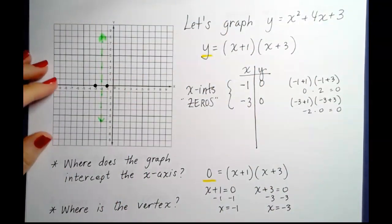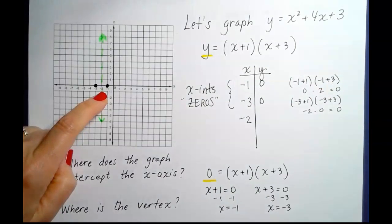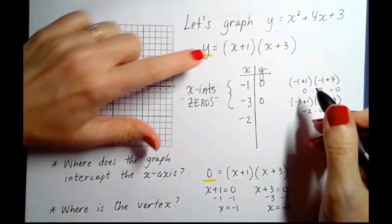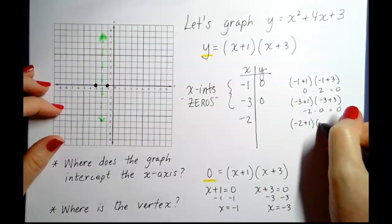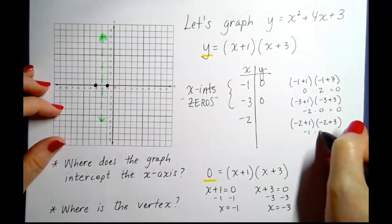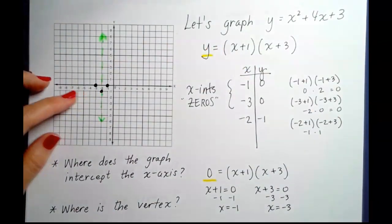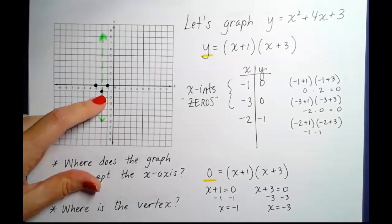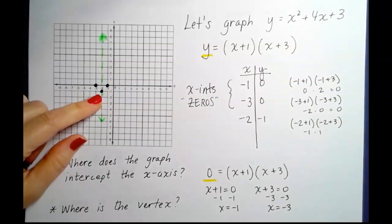There is an axis of symmetry — a vertical line cutting the parabola in half. Since our axis of symmetry runs through x equals negative 2, let's plug in negative 2. That gives (−2+1)(−2+3) = (−1)(1) = −1. So our third point is (−2, −1), which is our vertex, and it's a minimum value — the parabola opens upward.